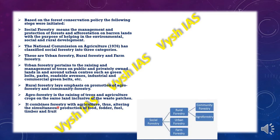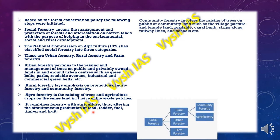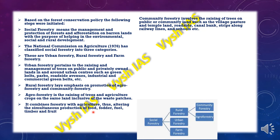Agroforestry combines forestry with agriculture to allow the simultaneous production of food, fodder, fuel, timber and fruits. Community forestry is at the community level, where trees are planted on public or community areas such as village pastures, temple land, roadsides, canal banks, strips along railway lines, and school grounds.